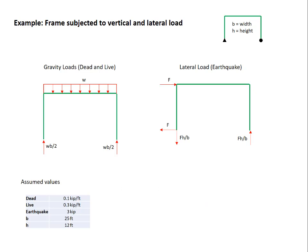Now we'll work with numbers in this problem. We'll assume that there's a dead load of 0.1 kips per foot, a live load of 0.3 kips per foot, the earthquake load F is 3 kips, the width B is 25 feet, and the height H is 12 feet.